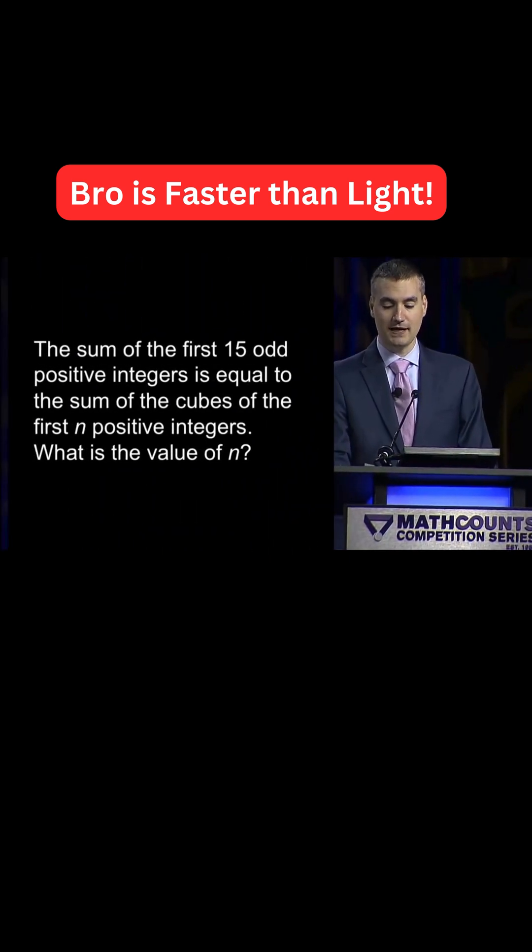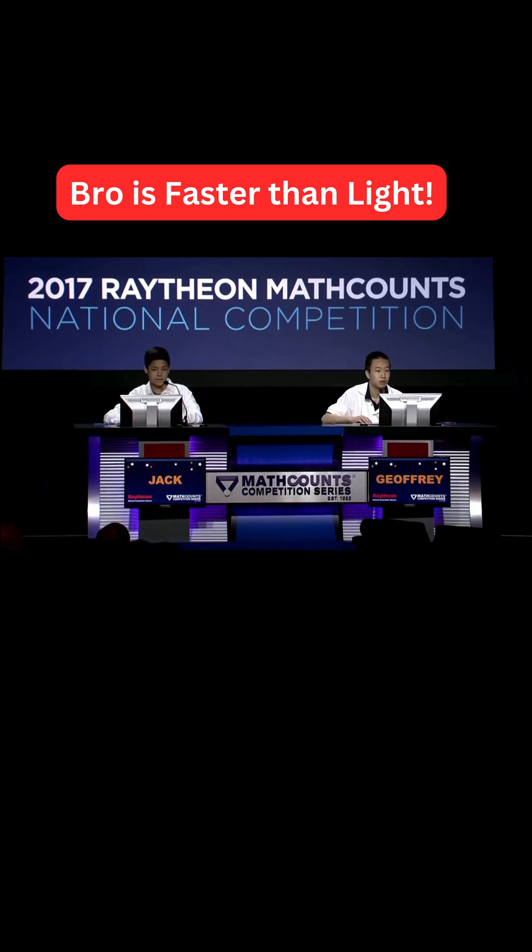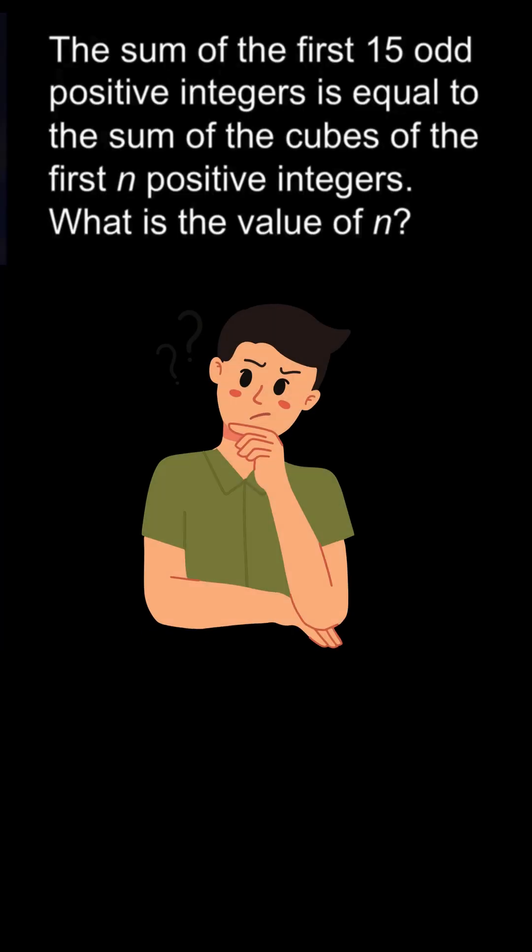The sum of the first 15 odd positive integers is equal to the sum of the cubes of the first... Jack. 5. 5 is the correct answer. Do you want to know how he solved it so quickly?